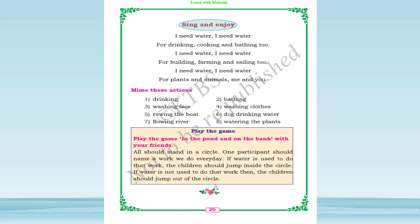If water is not used to do that work, the children should jump out of the circle. So make a circle, stand around it, and one participant names a daily activity. If water is used for that activity, jump inside the circle; if water is not used, come out of the circle. This is all about the chapter Water.